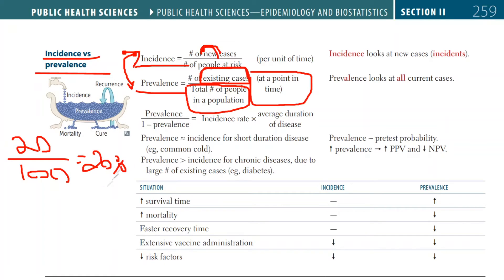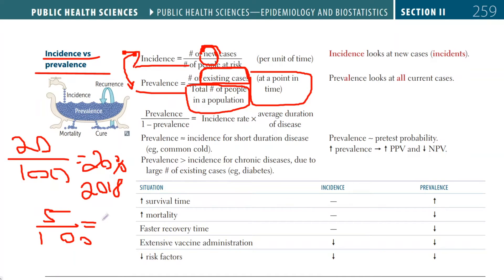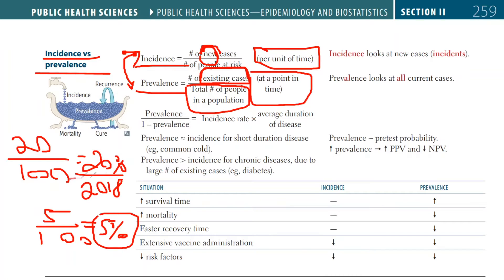Incidence is slightly different. Incidence only talks about new cases. So maybe each month we're only getting 5 out of 100 actually getting diabetes — so the incidence will be 5%. That means 5% of the people at risk are developing diabetes monthly or yearly, depending on the per-unit of time chosen. Prevalence describes all the existing cases within a particular point in time — it could be any year, any month, even a day.